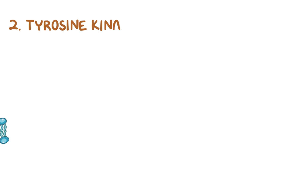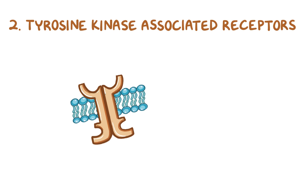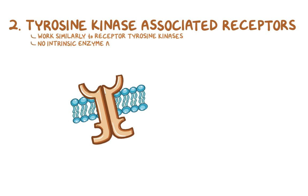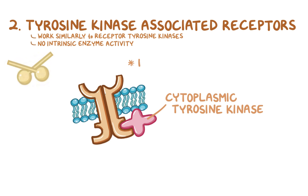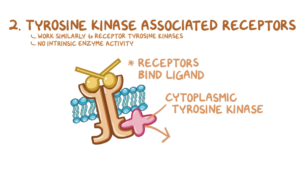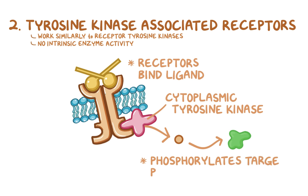Next are the tyrosine kinase-associated receptors, which work in nearly the same way as receptor tyrosine kinases — their name even sounds almost the same. The key difference is that they have no intrinsic enzyme activity; instead they're associated with cytoplasmic tyrosine kinases. When the receptors bind their ligand, the cytoplasmic tyrosine kinases phosphorylate various target proteins to relay the signal.